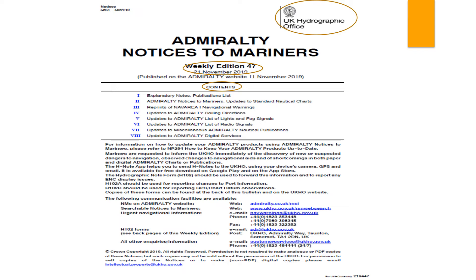Section 2 contains Admiralty Notices to Mariners updates to standard nautical charts. It provides the latest chart or latest edition that has been published, or an edition of the chart which may have been taken out of circulation.